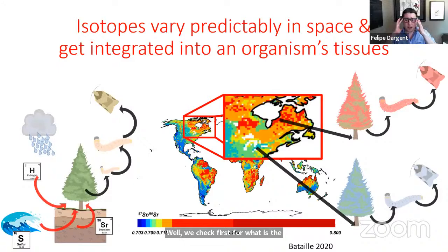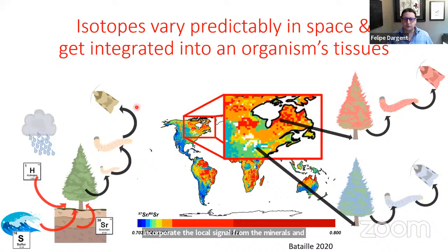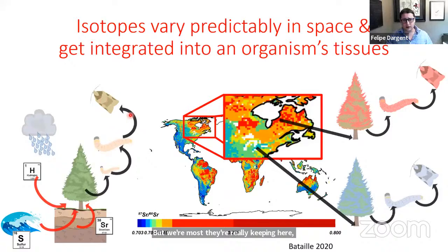How can we use isotopes for geolocation? We first check what is the bioavailable ratio of isotopes of a given element and use those as a reference to locate organisms. This works because isotopes vary predictably in space. As an organism like a spruce tree builds its tissue, it incorporates the local signal from the minerals and water it is consuming, and this is passed through the food chain up to the spruce budworm.